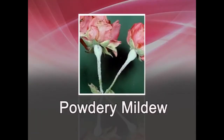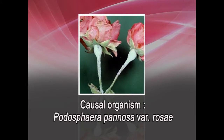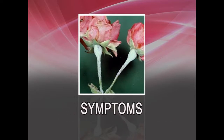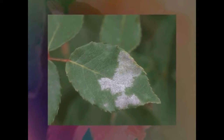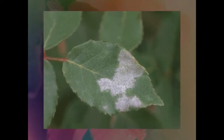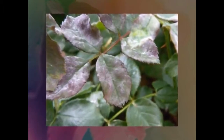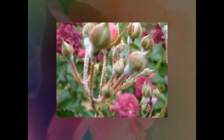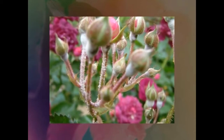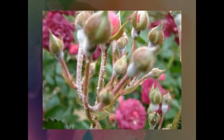The first important disease is powdery mildew. The causal organism is Podosphaera pannosa var. rosae. Initially, raised blister-like areas occur on the leaves and soon become covered with a white to grey powdery growth on leaves, shoots, sepals, buds, and occasionally on petals.